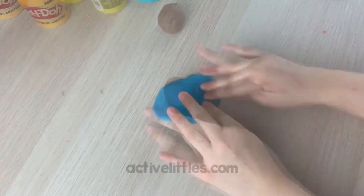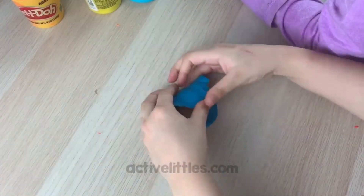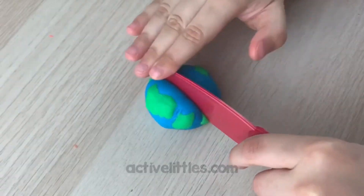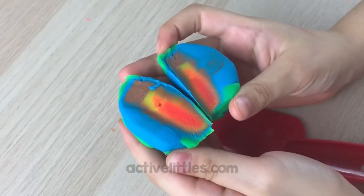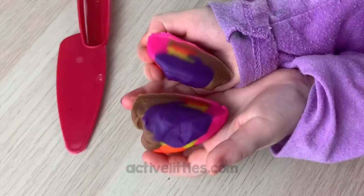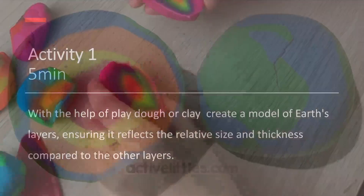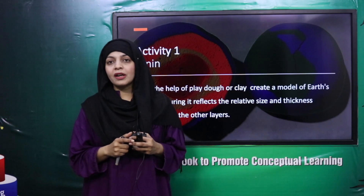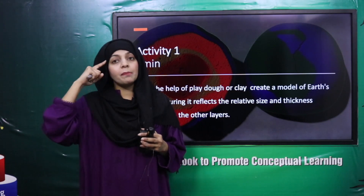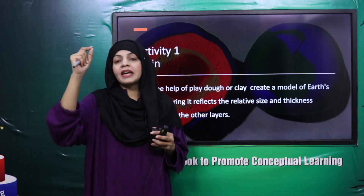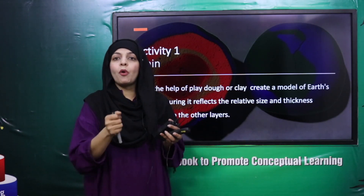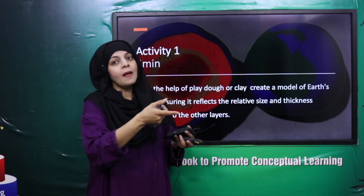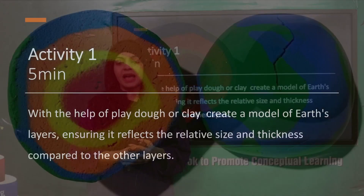When your model of the earth is complete, take a knife, cut it in half, and you will see the different layers of the earth. Keep the thickness of each layer in mind - referring to the 3D model for each layer's thickness. You can pause the video, go back, look at the 3D model, and then complete this activity.